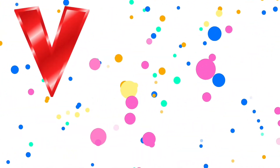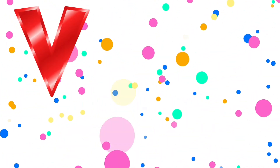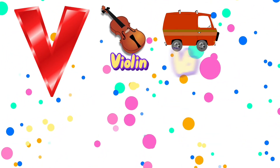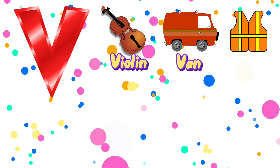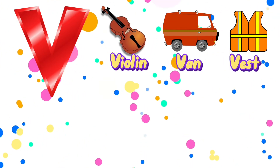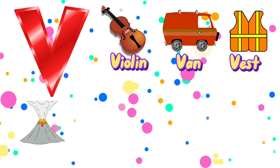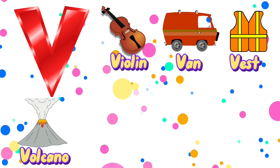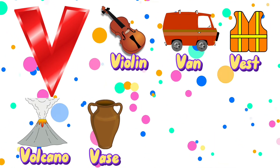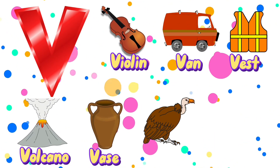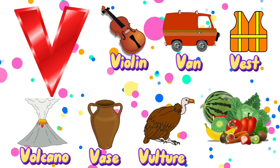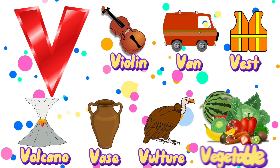V is for violin, van, vest, volcano, vase, vulture, vegetable.